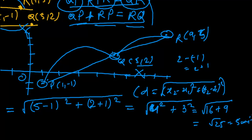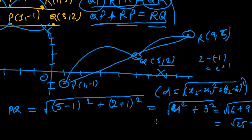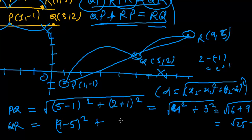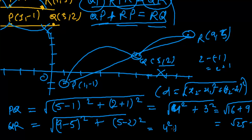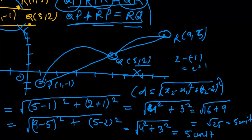Now let's find QR. Taking Q as (x1, y1) and R as (x2, y2): QR equals the square root of (9 minus 5) squared plus (5 minus 2) squared, which is the square root of 4 squared plus 3 squared — the same as before — so QR equals 5 units.